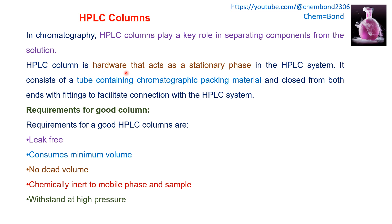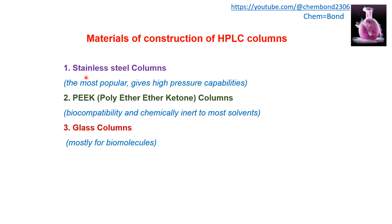The tube is made of plastic, glass, or steel, and is packed with packing material that acts as the stationary phase. Requirements for a good column include being leak-free, consuming minimum volume, having no void or dead volume, being chemically inert to mobile phase and sample, and being able to withstand high pressure. Materials used for HPLC columns are stainless steel, PEEK (polyether ether ketone), and glass.